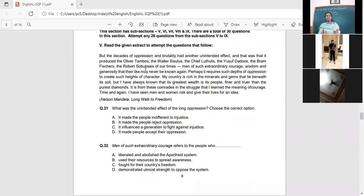But the decades of oppression and brutality had another unintended effect and that was that it produced the Oliver Tambos, the Walter Sissilus, the Chief Lutulius, the Yusuf Dadous, the Brant Fishers, the Robert Sobukwes of our time. Men of such extraordinary courage, wisdom and generosity that their life may never be known again. Perhaps it requires such depths of oppression to create such heights of character. My country is rich in the minerals and gems that lie beneath its soil, but I've always known that its greatest wealth is its people, finer and truer than the purest diamonds. It is from these comrades in the struggle that I learned the meaning of courage. You know this passage. You have read the chapter.